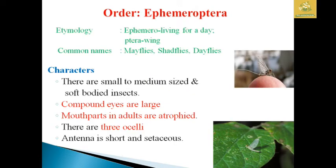In this order we are going to see about the order Ephemeroptera. In etymology, 'Ephemero' means living for a day and 'ptera' means wings. The common names of these insects are Mayfly, Shadefly, and Dayfly. Characteristics: small to medium sized soft-bodied insects; they have large compound eyes; mouthparts in adults are atrophied; they have 3 ocelli and the antennae are short and setaceous.